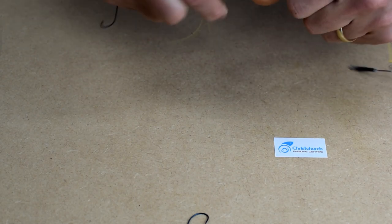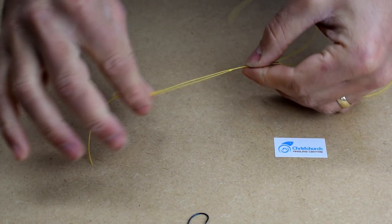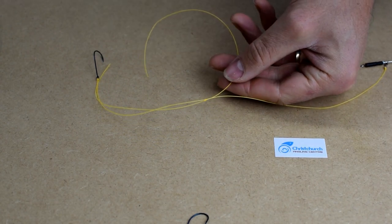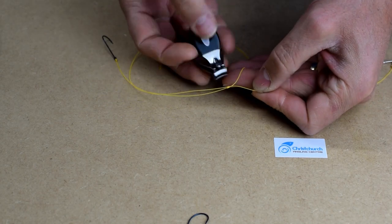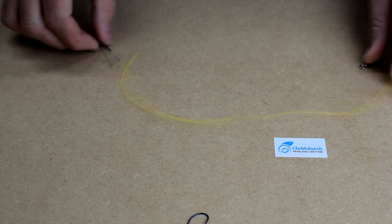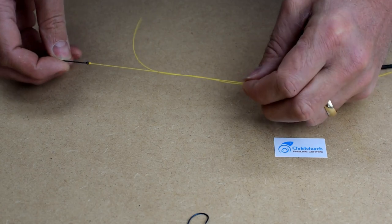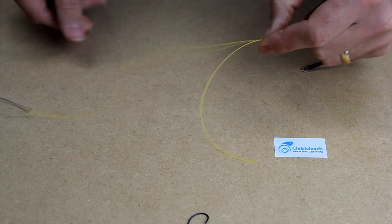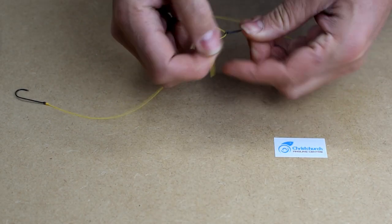Once you've done that, give it a good tighten down. Like so. Trim off that top tag, we don't need that. Like so. We now have that secondary bit of line there, which is a dropper. I'm going to attach the hook to it.